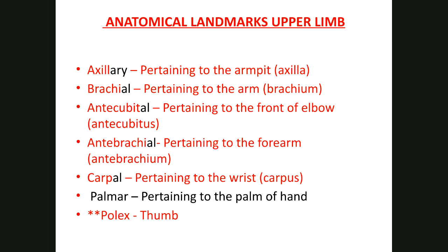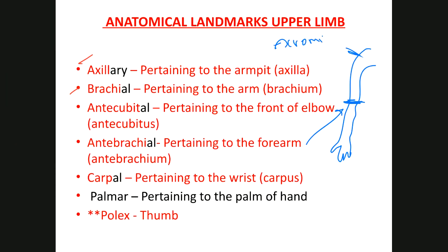Axillary refers to the armpit area. Brachial means arm. In anatomy, the brachial area is specifically between the tip of the shoulder — the acromion — and the antecubital area of the elbow. The antebrachial area is between the carpal area and the brachial area. Keep these terms straight and note their actual locations, as this information is useful for both lecture and lab.